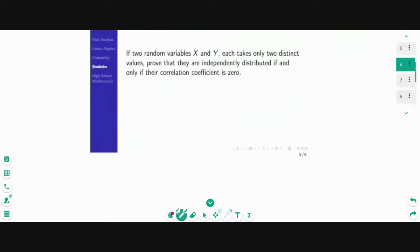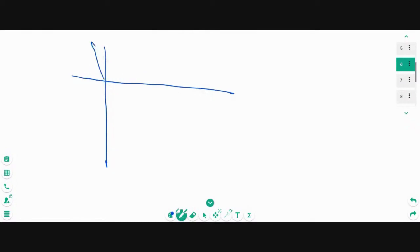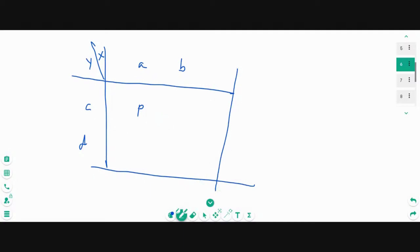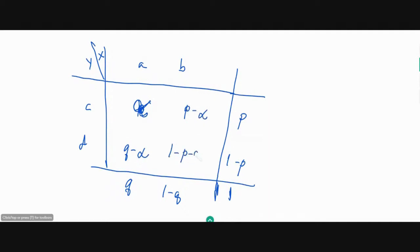Let's focus on this problem and understand the idea of independence from this contingency table. X takes values A and B, and Y takes values C and D. Let this marginal probability be P, so the other is 1 minus P. This marginal is Q, and the other is 1 minus Q. Let the joint probability P(X=A, Y=C) be alpha — this is the deciding factor. Then the other joint probabilities are: Q minus alpha, P minus alpha, and 1 minus P minus Q plus alpha.